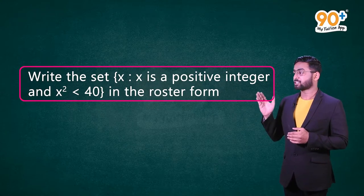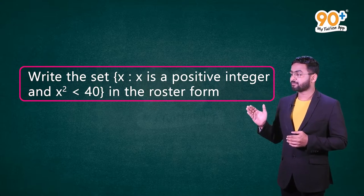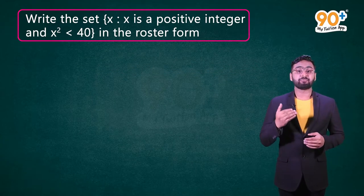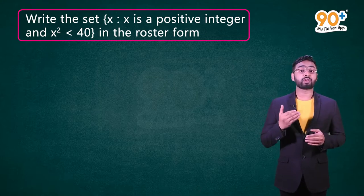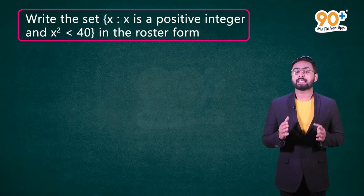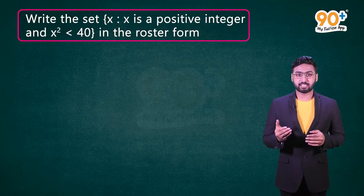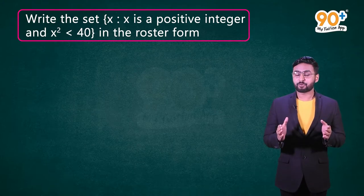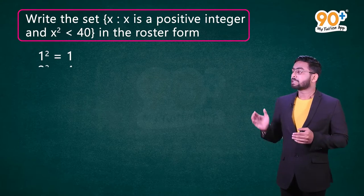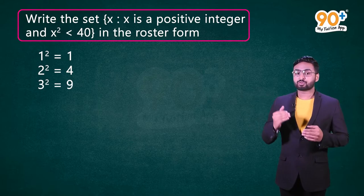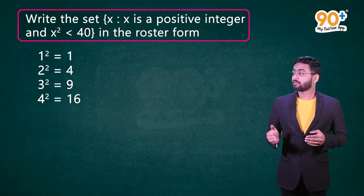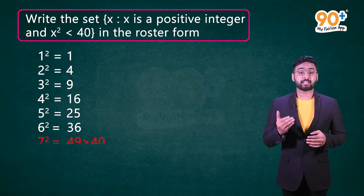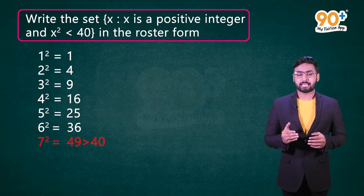Example 2: Write the set {x : x is a positive integer and x² < 40} in roster form. The set is given in set builder form and we have to write it in roster form. To do so, we list out its elements. It's given that x is a positive integer and the square of that integer is less than 40. The positive integers whose squares are less than 40 are: 1 (square 1), 2 (square 4), 3 (square 9), 4 (square 16), 5 (square 25), and 6 (square 36). We cannot include 7 because 7² = 49, which is greater than 40.